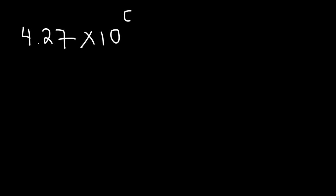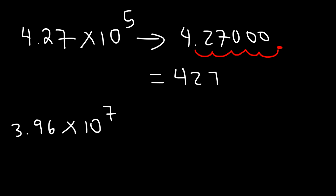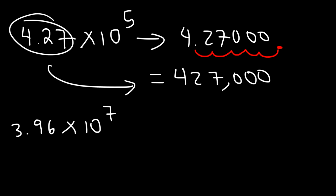Go ahead and try these two examples: 4.27 times 10 to the 5, and 3.96 times 10 to the 7. For 4.27, we move the decimal point 5 units to the right and add three zeros, giving us 427,000. Since 10 to the 5th is 100,000, and 100,000 times 4.27 equals 427,000.